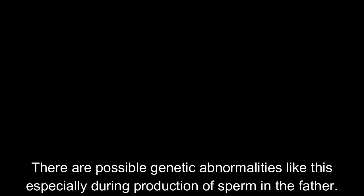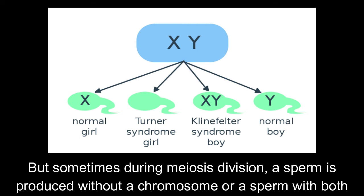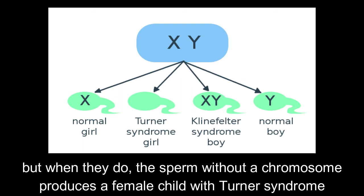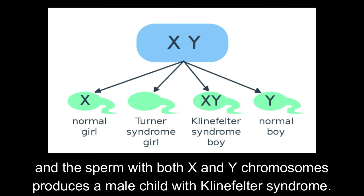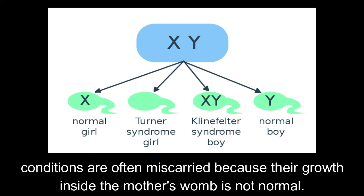What happens when there is no X chromosome at all present in a child? There are possible genetic abnormalities like this, especially during production of sperm in the father. There are supposed to be only two types of sperms: sperm X and sperm Y. But sometimes during meiosis division, a sperm is produced without a chromosome or a sperm with both X and Y chromosomes. Most of the time, sperms like these do not reach the egg in the fallopian tube. But when they do, the sperm without a chromosome produces a female child with Turner syndrome, and the sperm with both X and Y chromosomes produces a male child with Klinefelter syndrome. Most fetuses with these conditions are often miscarried because their growth inside the mother's womb is not normal.